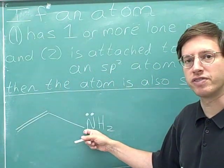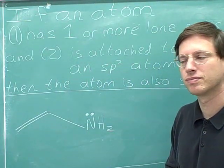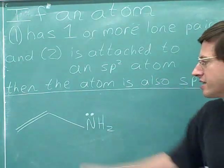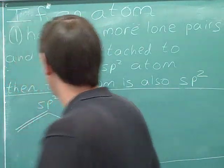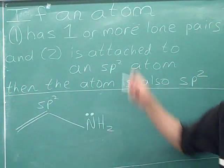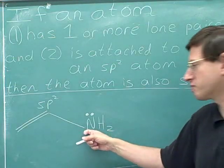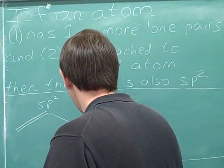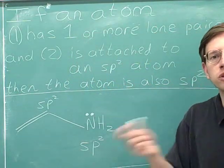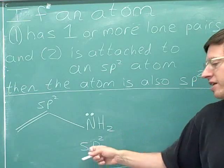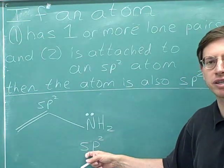What's the hybridization of this nitrogen? It has a lone pair and it's attached to an sp2 atom, so the exception applies in this case. This atom must also be sp2. If all you knew was the basic rule, you might think this would be sp3, but now that we've learned about the exception, we know that this is actually sp2.